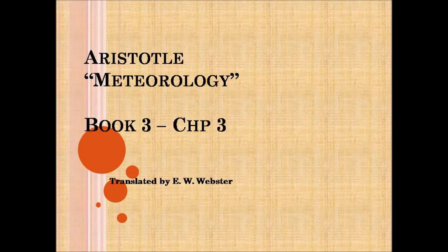Let us begin by explaining the shape of the halo, why it is a circle and why it appears around the sun or the moon or one of the other stars, the explanation being in all these cases the same. Sight is reflected in this way when air and vapor are condensed into a cloud and the condensed matter is uniform and consists of small parts.